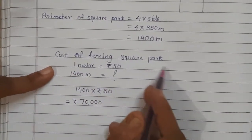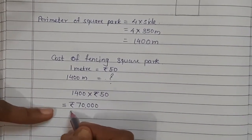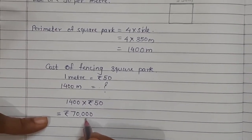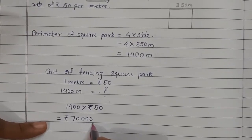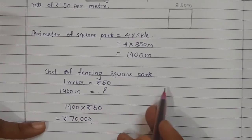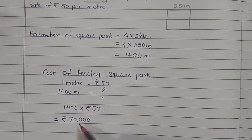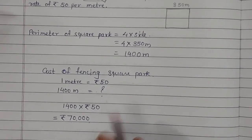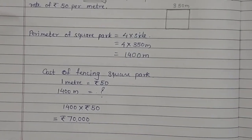So the cost of fencing a square park is rupees 70,000.